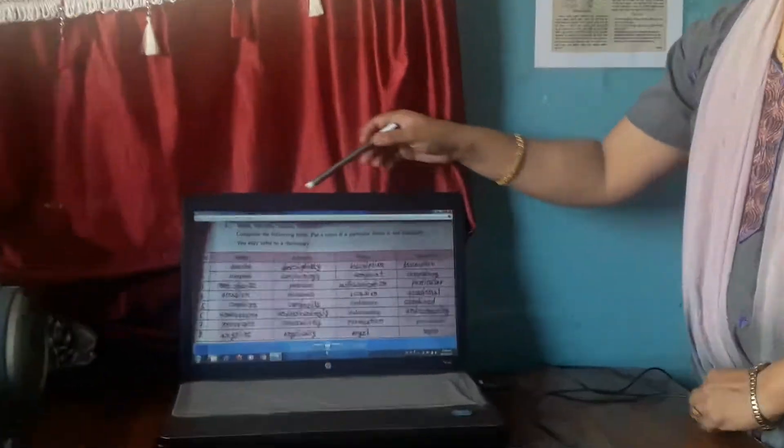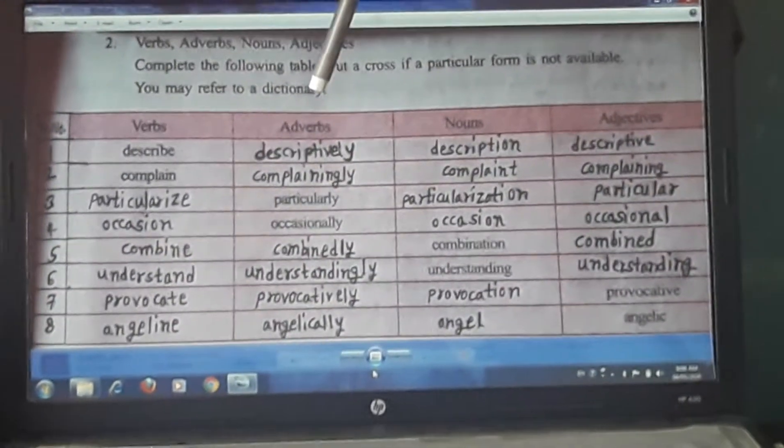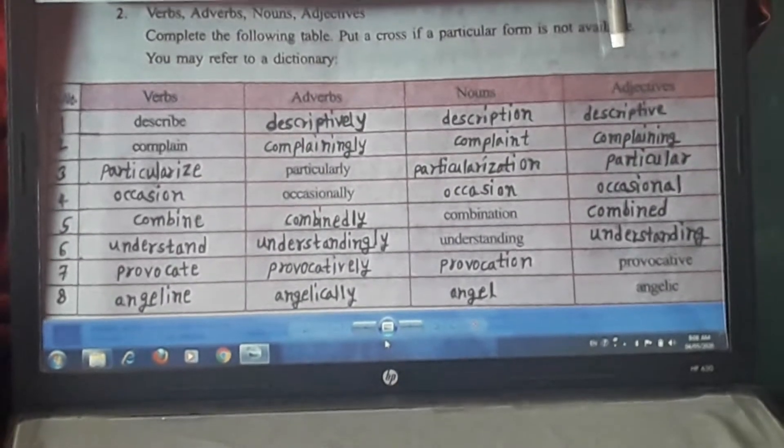See here. Here is the table showing you all word forms: adjectives, nouns and adverbs.